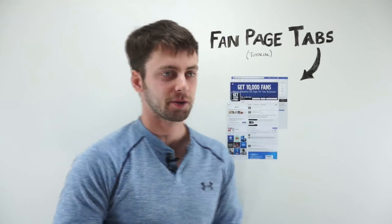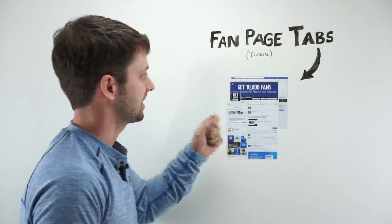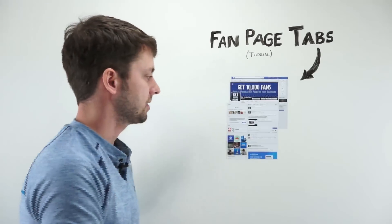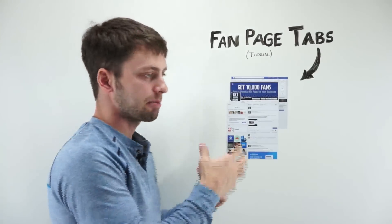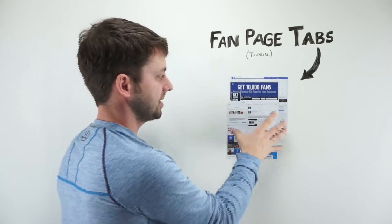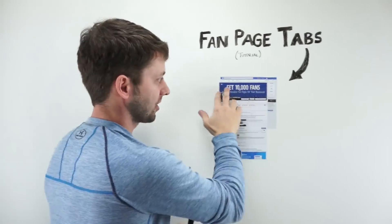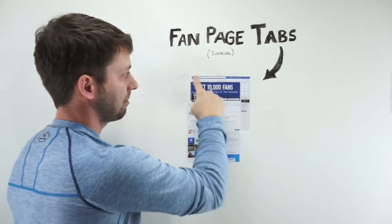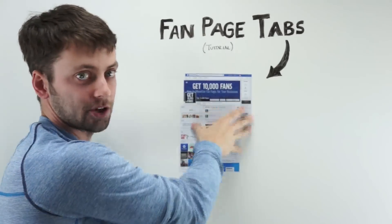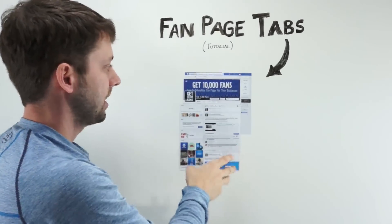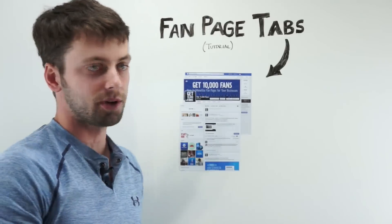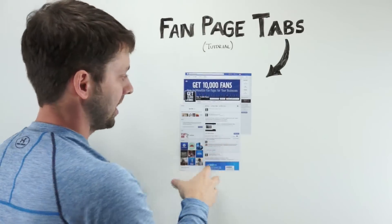Hey guys, this is Brian from Get 10,000 Fans. What I want to talk to you about today are fan page custom tabs, or fan page landing tabs, and how to basically put them together. This is a quick little tutorial video for you guys. This is a normal fan page — your cover photo up top, all the navigation, ads over on the right, and your actual wall down the center. A custom tab is just an application that you can install into your fan page.